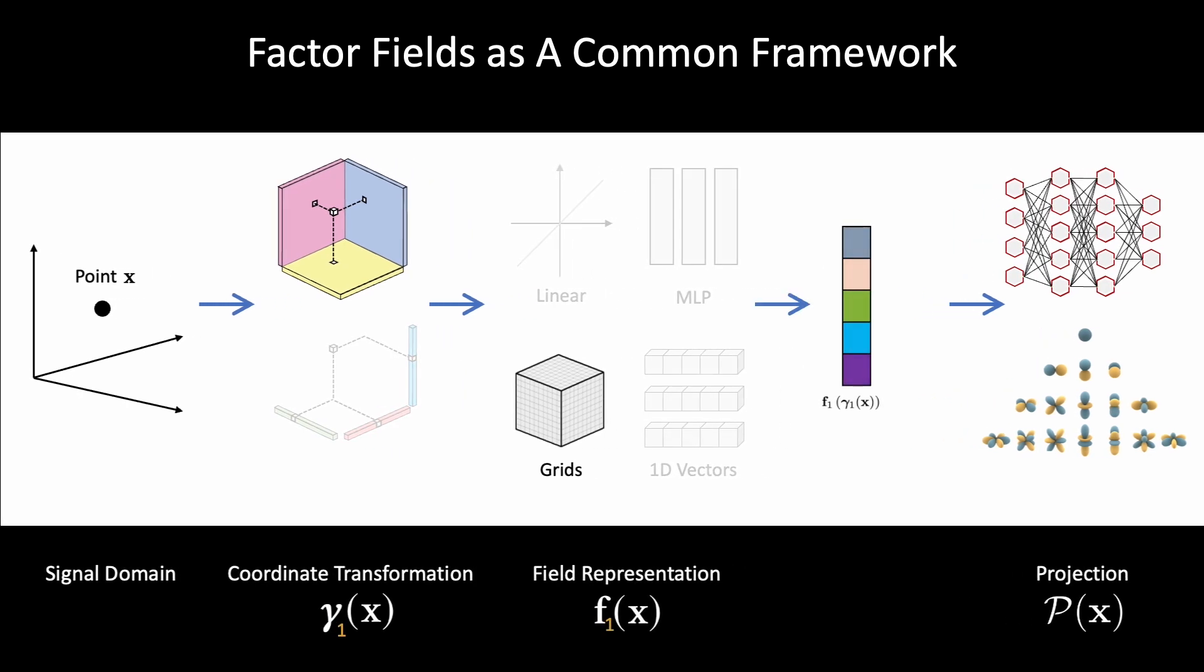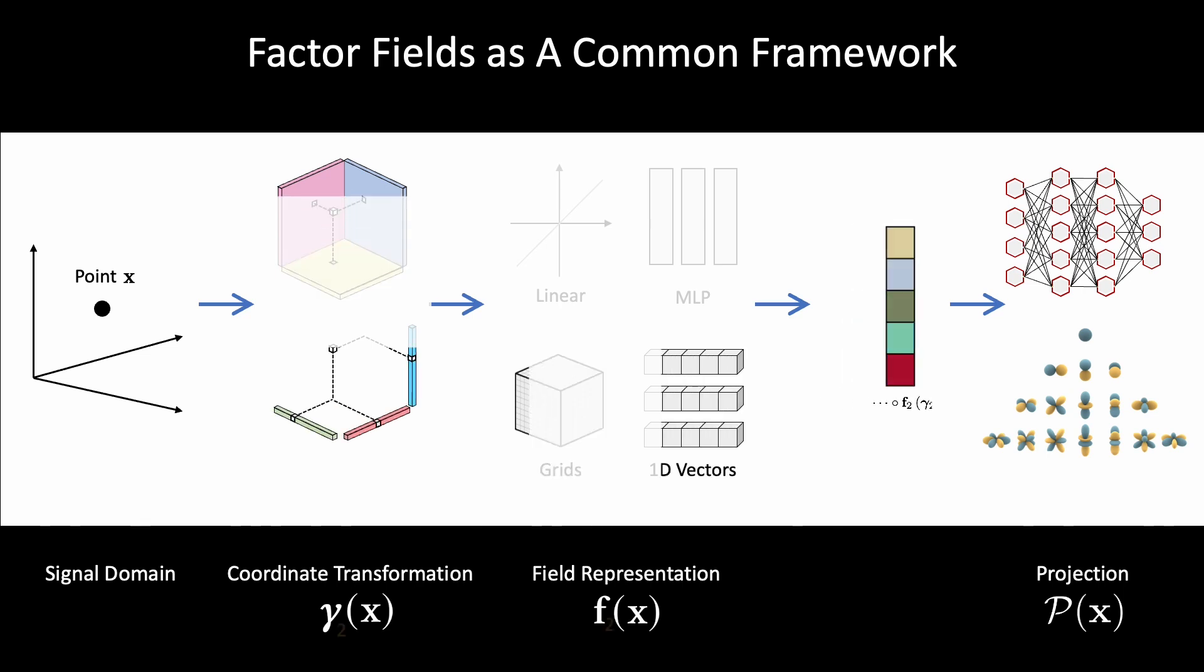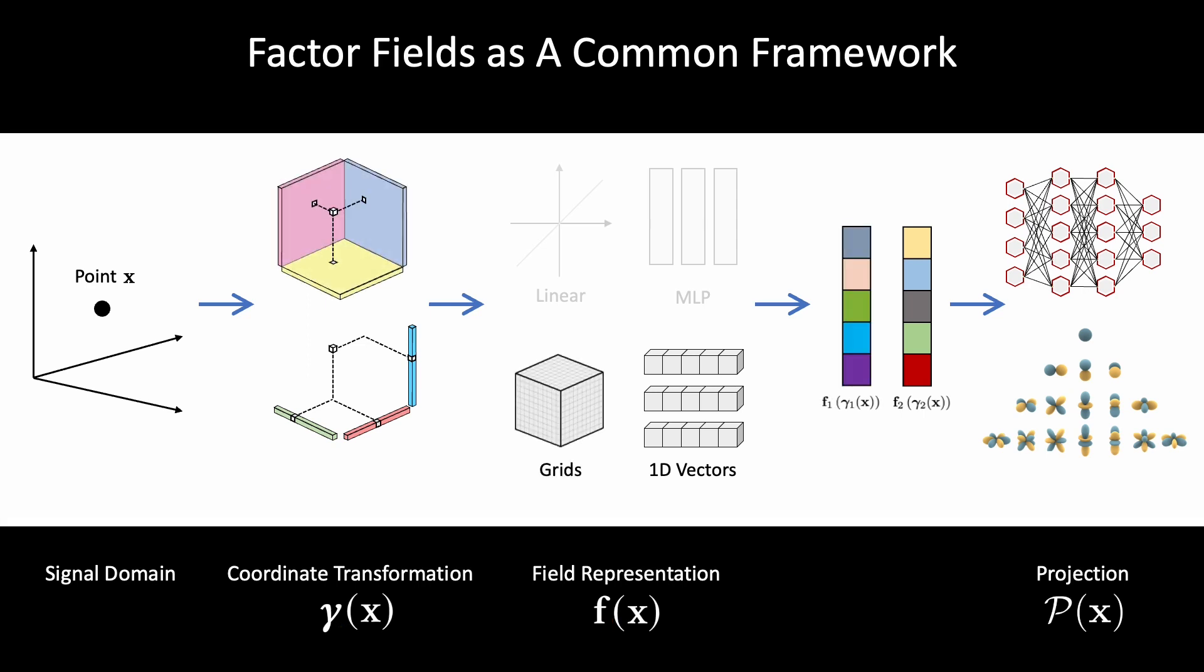Where factor one is represented by 2D dense grids incorporating an orthogonal coordinate transformation function which projects the 3D scene coordinate into three 2D coordinates. And factor two is composed of a set of 1D vectors associated with another orthogonal transformation from 3D to 1D. The factor features are connected via a Hadamard product.